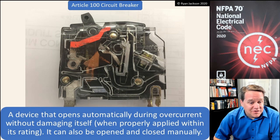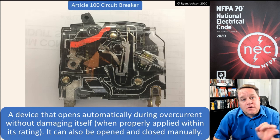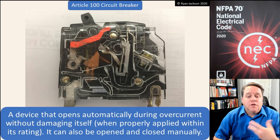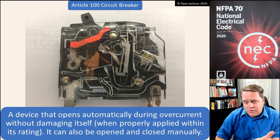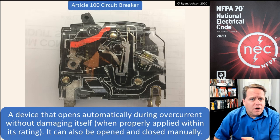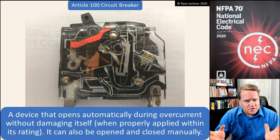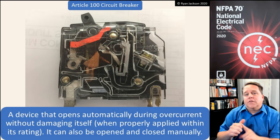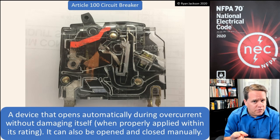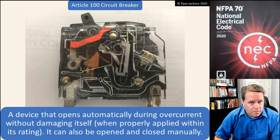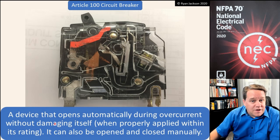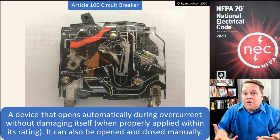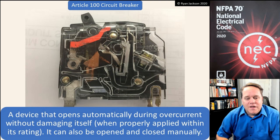Article 100 circuit breakers. A circuit breaker is a device that opens automatically during overcurrent without damaging itself when properly applied within its rating. Overcurrent is a ground fault, a short circuit, or an overload — any of those three will cause a circuit breaker to open generally without damage to itself. If the circuit breaker clears a fault but explodes, what did we really solve? So without extensive damage to itself.